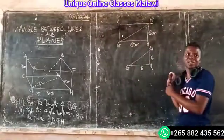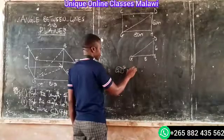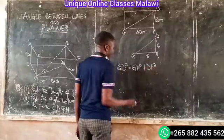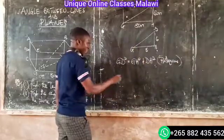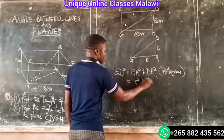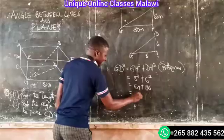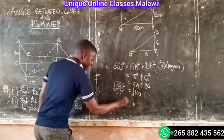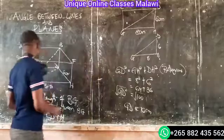So we consider GD squared. GD squared equals GH squared plus DH squared. That is 6 squared plus 8 squared, which gives 36 plus 64. Since we are finding GD, we get GD equals approximately 10 cm.